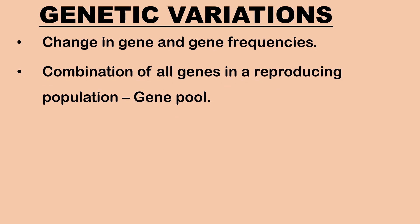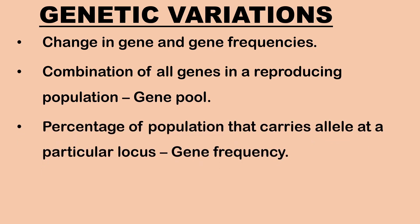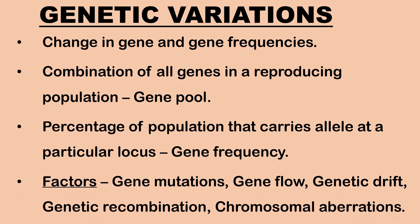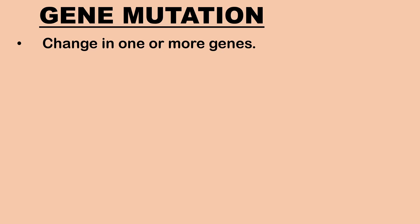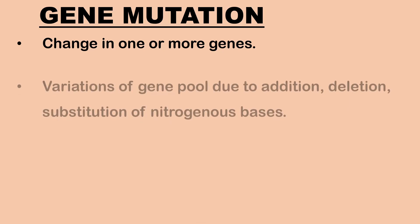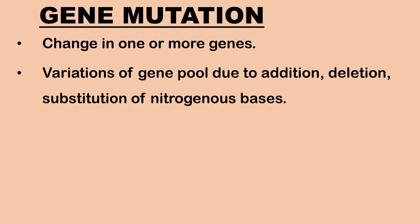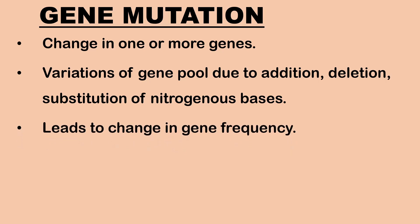The combination of all the genes present in a reproducing population is called the gene pool. The percentage of a population that carries an allele at a particular locus is called gene frequency. Genetic variation in populations is caused by factors like gene mutations, gene flow, genetic drift, genetic recombination and chromosomal aberration. Gene mutation or point mutation refers to a change in one or more genes. There is variation in the gene pool due to addition, deletion or substitution of the nitrogenous bases, which bring about change in gene frequency.